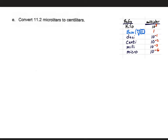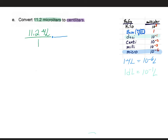On to part E — go ahead and pause the video to try it. On this question we're converting 11.2 microliters into centiliters. The conversions we'll need are microliter to liter and centiliter to liter. We start by writing 11.2 microliters as a fraction over 1. We have microliters on top, so the second fraction should have microliters on the bottom and liters on top. With the microliter we put the 1, and with the liter we put 10 to the negative 6.